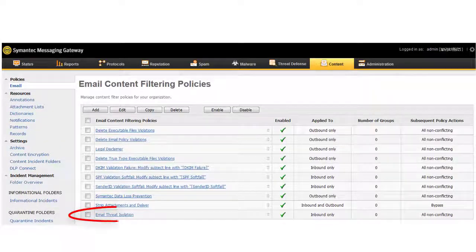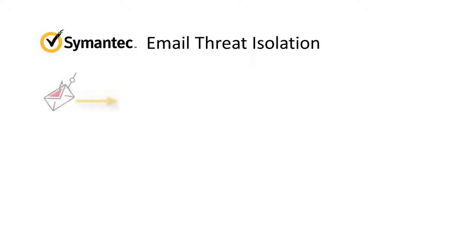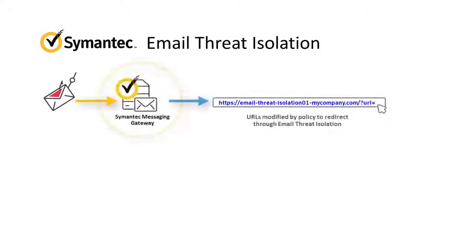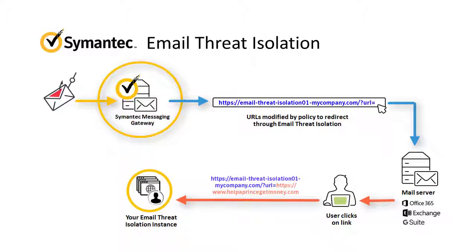Or, make sure that higher priority policies are all non-conflicting. Your connection to Email Thread Isolation is now complete. Each time a recipient clicks a link in an inbound email, their browser is redirected to your Email Thread Isolation instance and the user is protected.